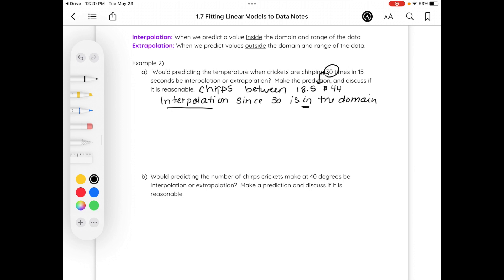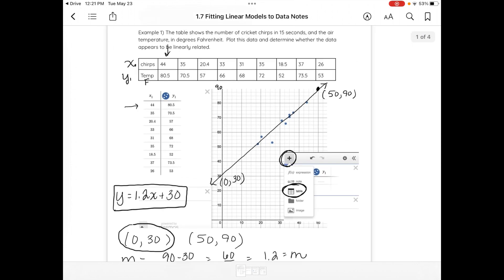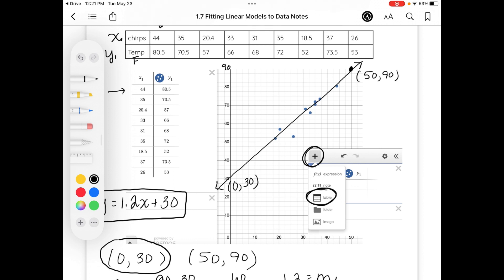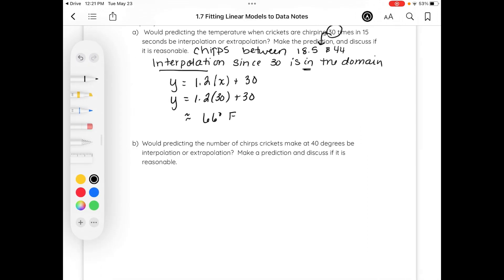And then predict. Well, we'll use the same equation that we found on the first page. We said that the temperature could be equal to the number of chirps. So 1.2 times the number of chirps plus 30. So let's see, if I put in 30 for x, the temperature should be about 66 degrees Fahrenheit. When we look back at our previous page and we try to plot that, that does seem reasonable to the data that's given. So this is reasonable to the information provided.